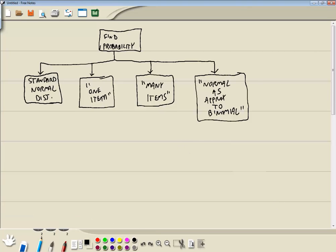Now here's our flowchart for finding the probability. If it says standard normal distribution, there's a separate video on that. If it refers to one item, find the probability that a book has an average number of pages less than 200. Many items would be like find the probability that 30 people have an average age greater than 50. So we're talking about more than one book, more than one person, more than one car. And the last one will say normal approximation of the binomial. Now specifically in this video, we're taking a look at the one item case.